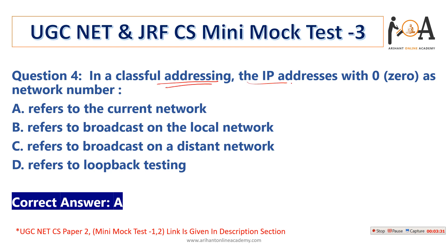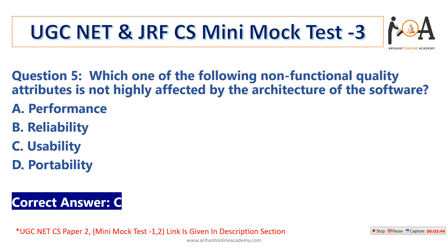The next question: in classful addressing, an IP address with zero as a network number basically represents the current network. So option A is the correct answer.